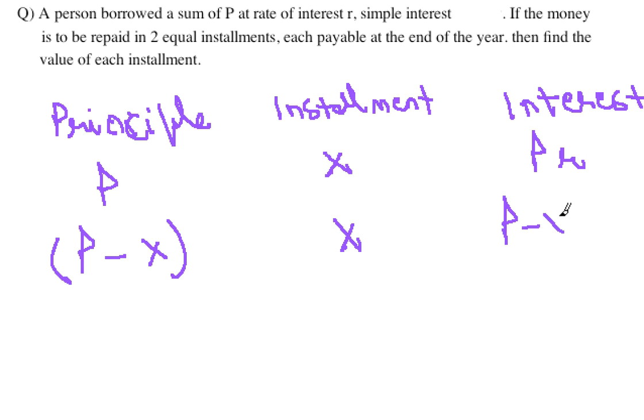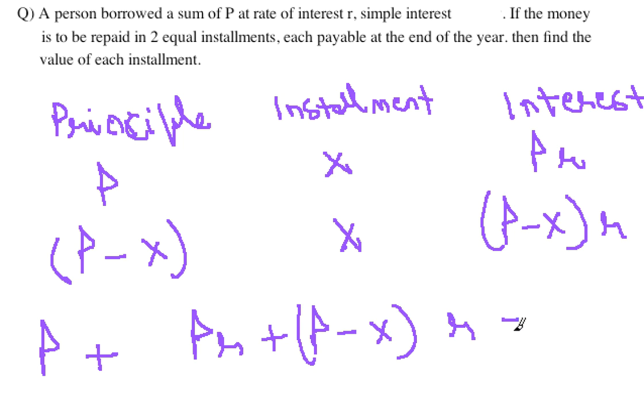Now what we do, we simply equate these installments with whatever we owe. So the total principle that we owed was P. The total interest was Pr plus P minus x into r. This should be equal to 2x because the principal plus interest should be equal to the amount which we are paying back.